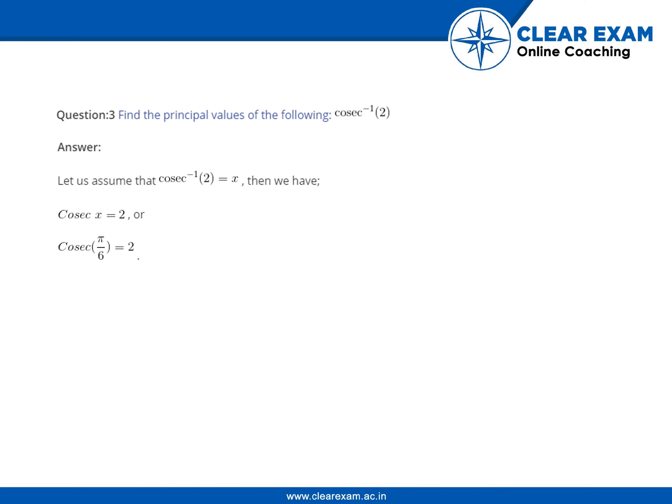Now, we know the value of 2 is cosec pi by 6. Right? And also, we know the range of the principal value of cosec x lies between minus pi by 2 to pi by 2 minus 0.